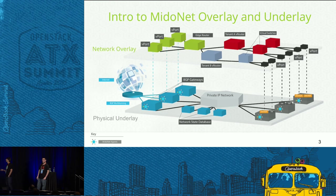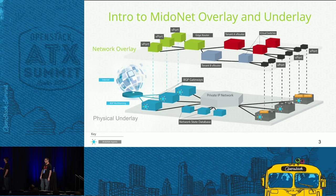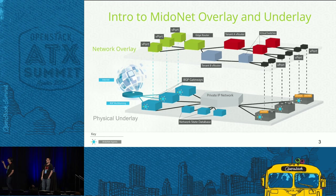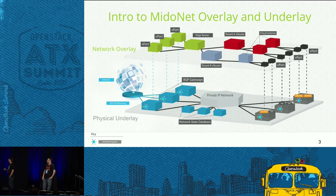In this slide we can see the underlay physical network formed by a number of BGP gateways and the compute nodes running the VMs or Docker containers. What happens is that when a packet egresses a compute node or a gateway node, MioNet puts this packet into the overlay network and performs what we call a simulation. That means the packet will traverse the virtual topology that is created so that MioNet decides whether it has to be sent — if it's south-north traffic, sent to a BGP gateway to the exterior; if it's east-west traffic, routed to another compute.